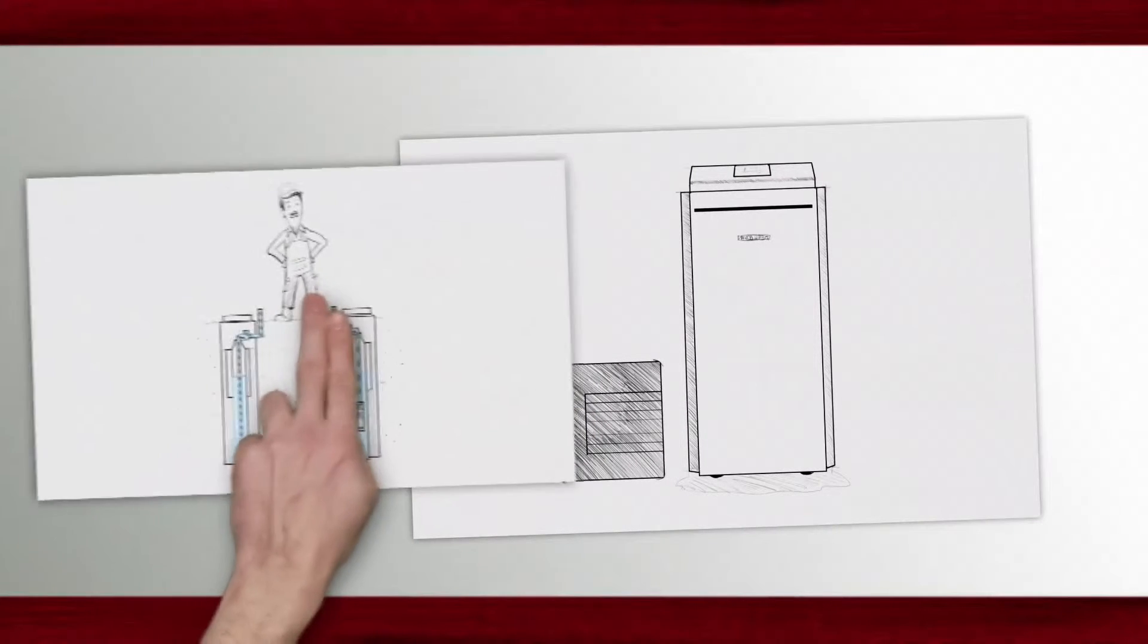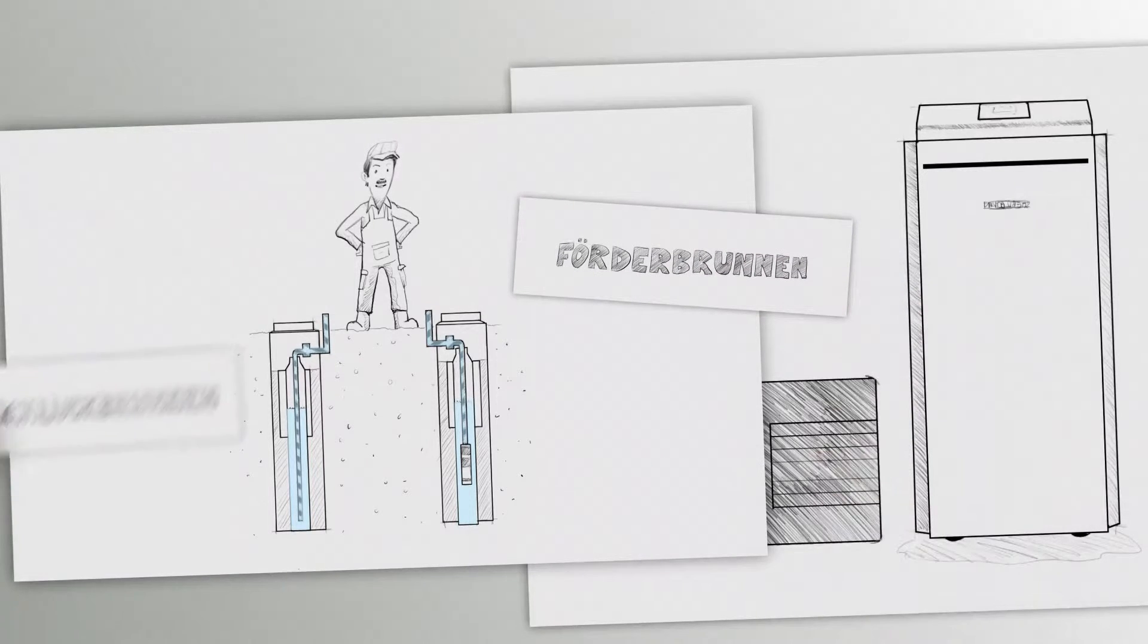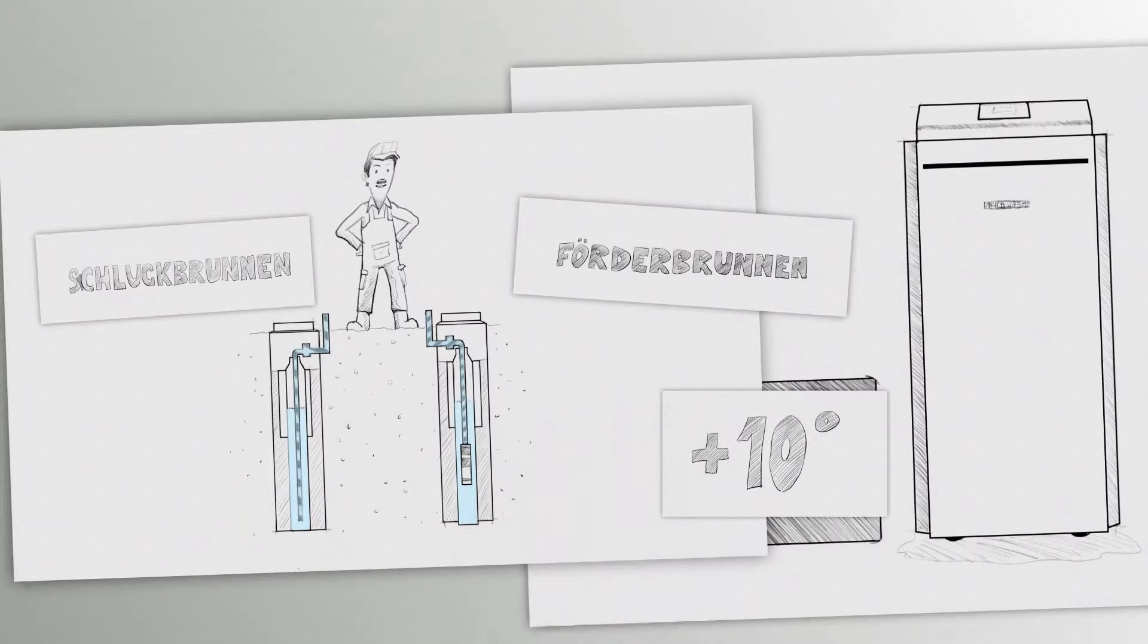The ground source heat pump uses the groundwater as an energy source. A great advantage of this system is that our groundwater has almost always the same temperature all year round. On average it is plus 10 degrees.